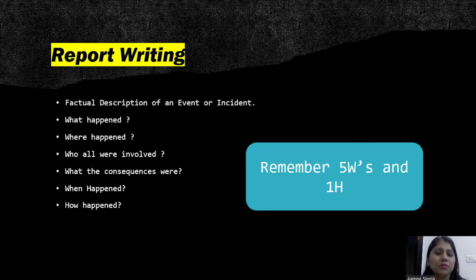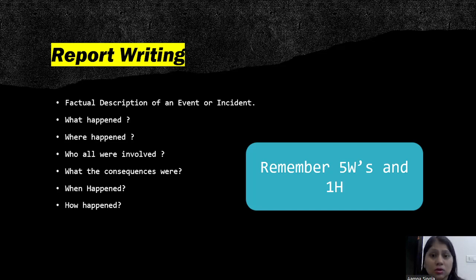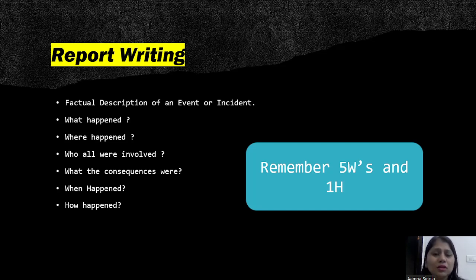In report writing, you need to remember five W's and one H. Report writing is either a factual description of an event or some incident. Incident means some accident, and event means some program like a Children's Day celebration or an annual function day. This is what you need to report about — something that has already happened.